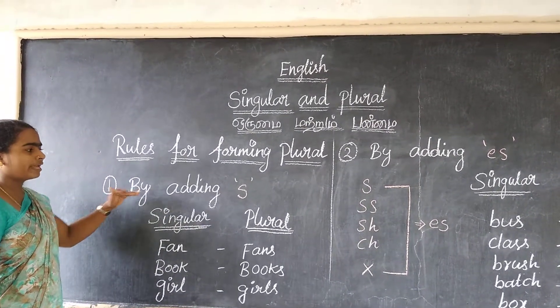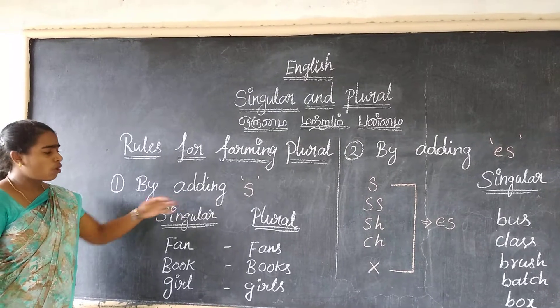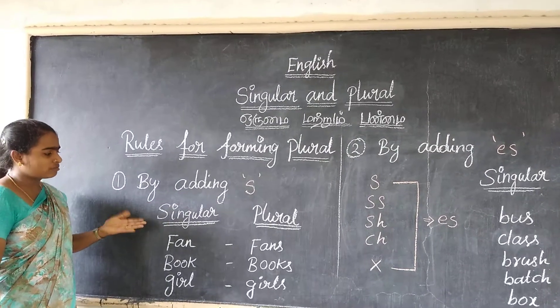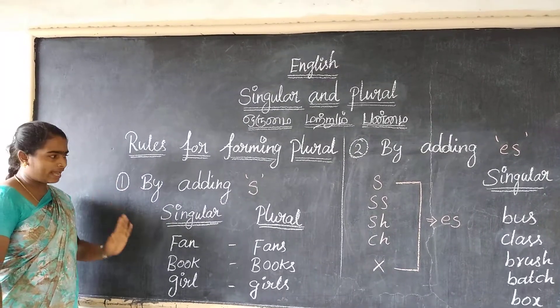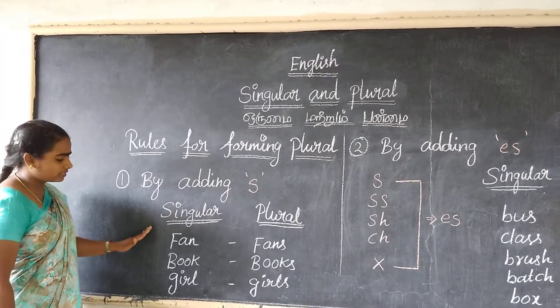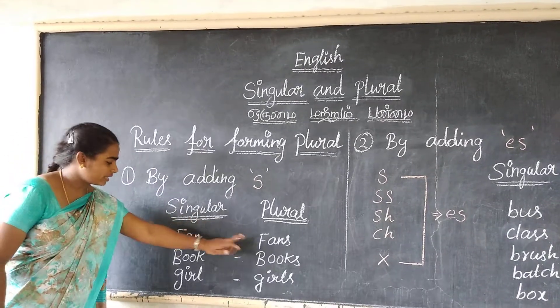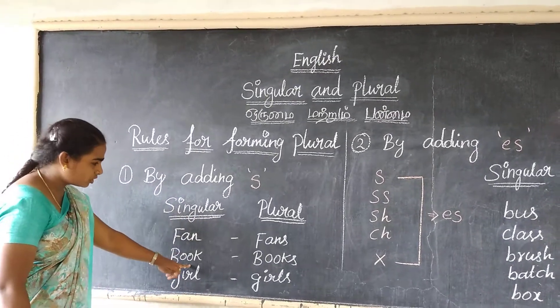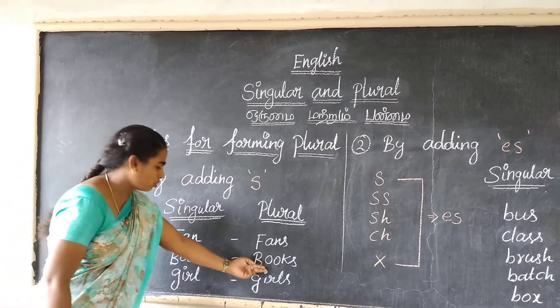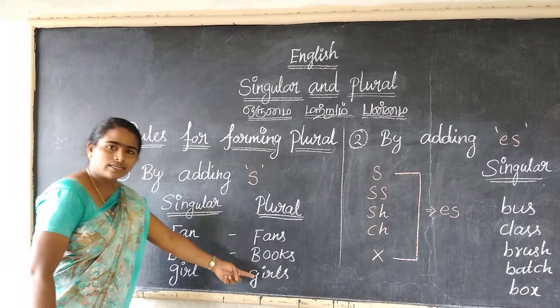First rule: by adding 's'. While changing from singular to plural, we generally add 's'. For example: fan becomes fans, book becomes books, girl becomes girls.